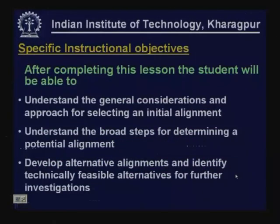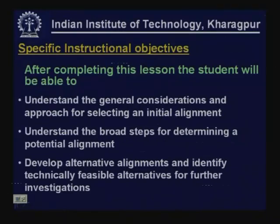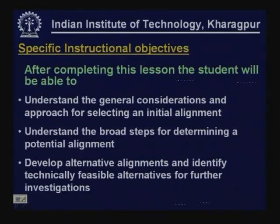After completing this lesson, the student will be able to understand the general considerations and approach for selecting an initial alignment, what are the major considerations while selecting an initial alignment. The student will also understand the broad steps for determining a potential alignment, how potential alignments can be identified, and how to develop alternative alignments and identify technically feasible alternatives for further investigations.